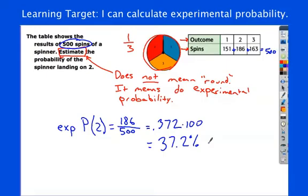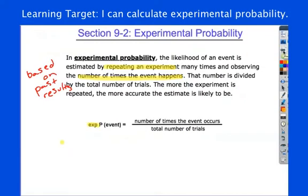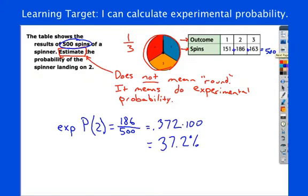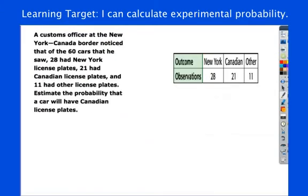So, 37.2% of my spins were twos. So, I expect in the future, if my past results, remember we said these are observed observations of all these trials. In the past, if it was 37.2%, we expect in the future that trend will continue. All right, here we go.